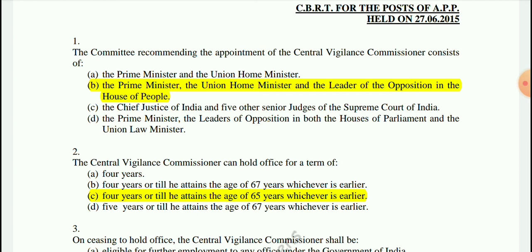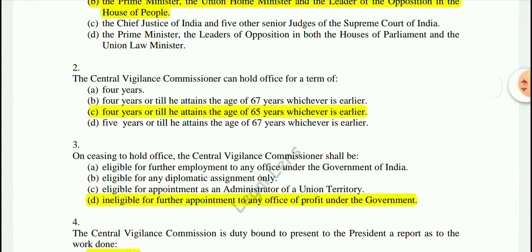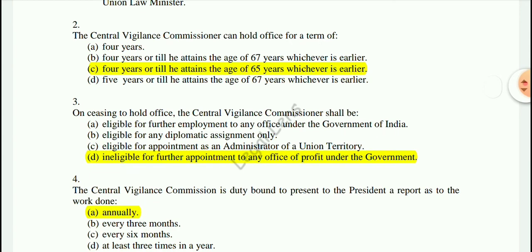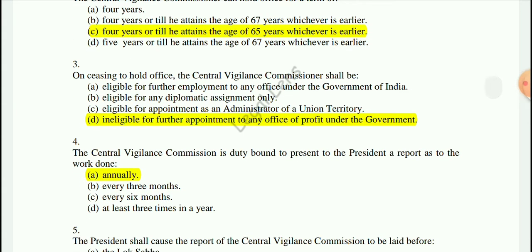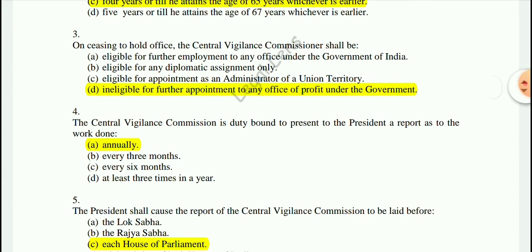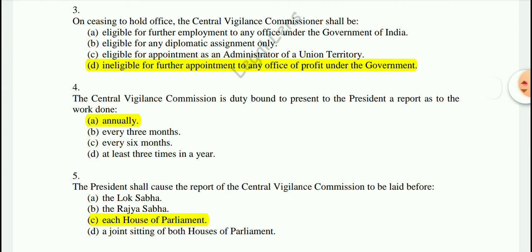Question 2: The Central Vigilance Commissioner can hold office for a term of 4 years or until 65 years of age. Question 3: The Central Vigilance Commissioner shall be ineligible for further appointment to any office of profit under the government. Question 4: The Central Vigilance Commission is duty-bound to present to the President a report annually.